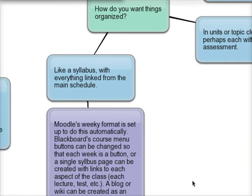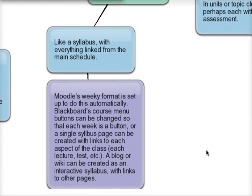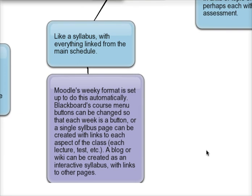If I prefer things organized like an actual syllabus where everything is linked from one big main schedule, there are several ways to do that. Moodle's weekly format is already set up for this and even puts in the dates once you set the starting and ending dates of the class. Blackboard's course menu buttons can be changed so that each week is a button, and a single syllabus page can be created with links to each aspect of the class — lectures, tests, and other content. Similarly, a blog or wiki can serve as an interactive syllabus by linking to other pages and content in the class.